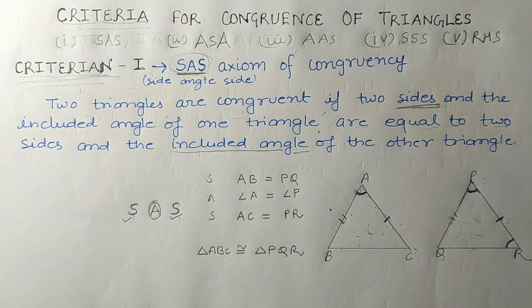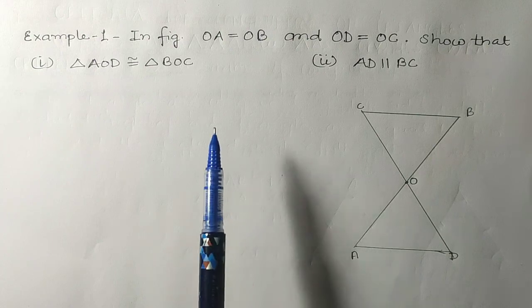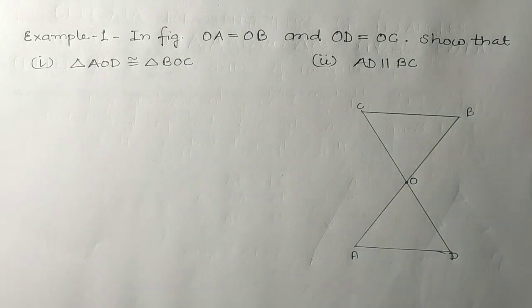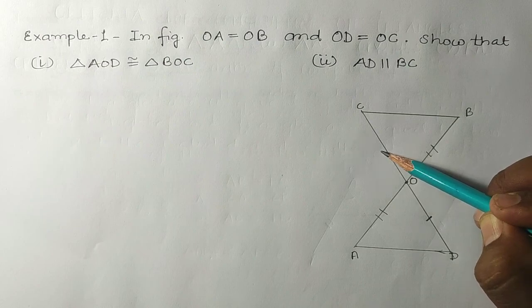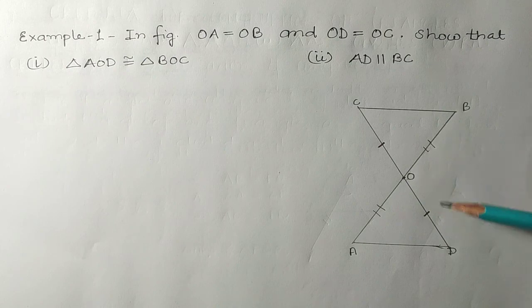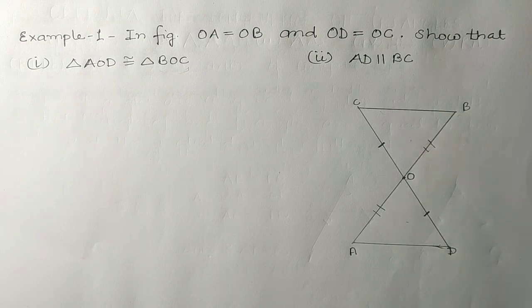Now we will see a question based on the SAS criterion. In the figure, OA equals OB and OD equals OC. We have to show that triangle AOD is congruent to triangle BOC, and then show that AD is parallel to BC.